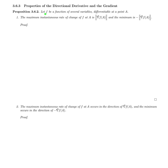Let f be a function of several variables that is differentiable at a point a. The maximum instantaneous rate of change of f at a is the norm of the gradient of f at a, and the minimum instantaneous rate of change of f at a is the negative norm of the gradient of f at a.